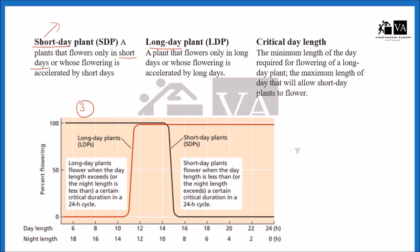On the other hand, long day plants require long days or long hours of photo period for flowering. You can see in this diagram, long day plants accelerate their flowering when they reach a certain period of day length. Short day plants accelerate their flowering when the night length is more, and they need an uninterrupted dark period for flowering.